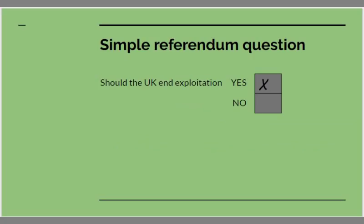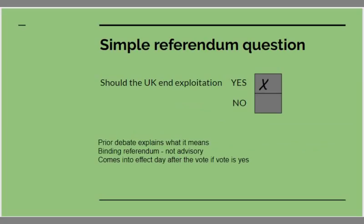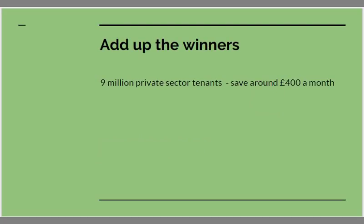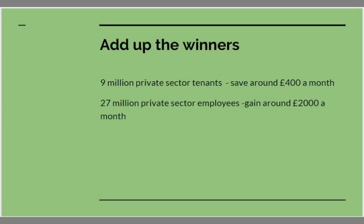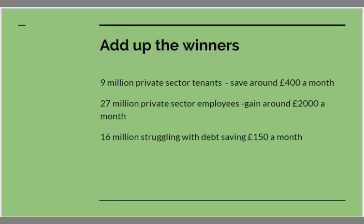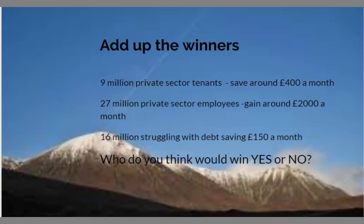Suppose there was a simple referendum question: should the UK end exploitation, yes or no? Suppose there had been prior debate to explain what it means, and this is a binding referendum that comes into effect the day after a yes vote. Let's add up the winners: 9 million private sector tenants each saving £400 a month, 27 million private sector employees each gaining £2,000 a month, and 16 million struggling with debt saving £150 a month. Who do you think would win — yes or no?